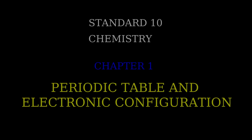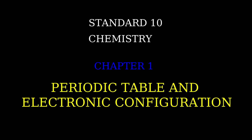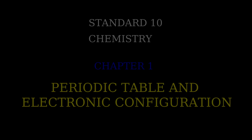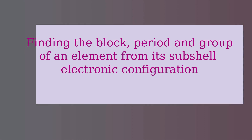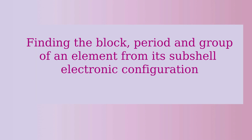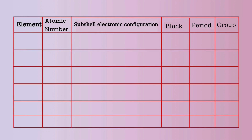Standard 10 Chemistry, Unit 1: Periodic Table and Electronic Configuration. This lesson covers finding the block, period, and group of an element from its subshell electronic configuration. A table is given — try to complete the table.